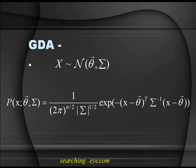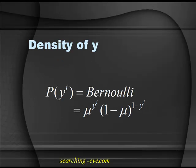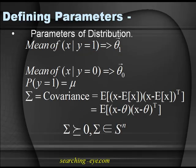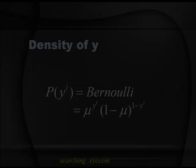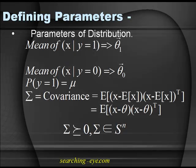For the assumption on y, we make the assumption that y belongs to a Bernoulli distribution, that is p(yi) = mu^yi times (1 minus mu)^(1 minus yi). This was already covered in the logistic regression model. Now we define the parameters of the distribution.